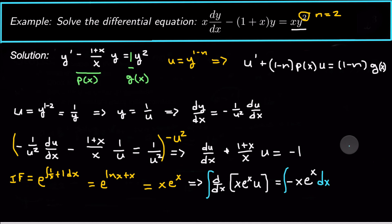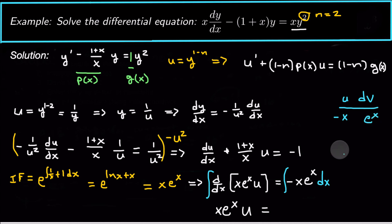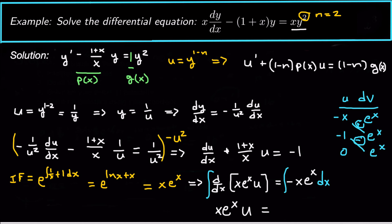Integrating both sides with respect to x: the left side just gives x · e^x · u. The right side requires integration by parts, so I'll use tabular integration. I put negative x in the differentiation column and e^x in the integration column, differentiate down to zero, integrate across, and multiply the diagonals. This gives negative x · e^x plus e^x plus C.